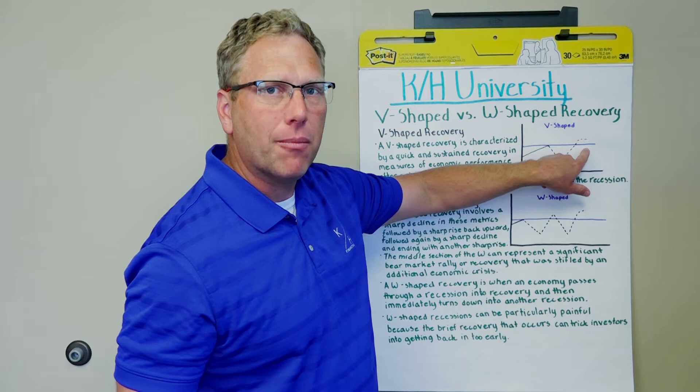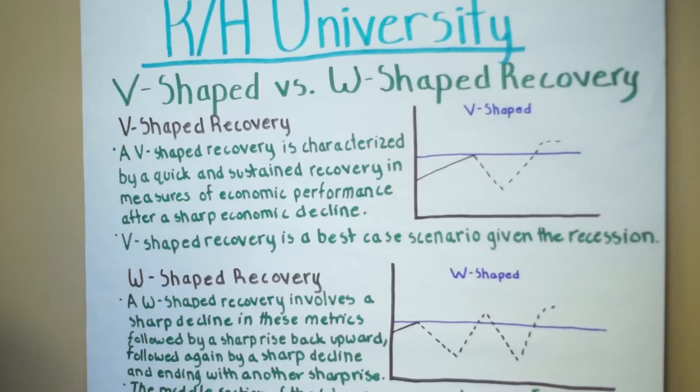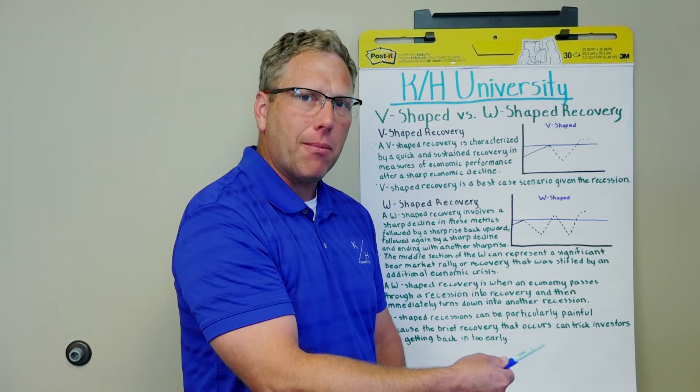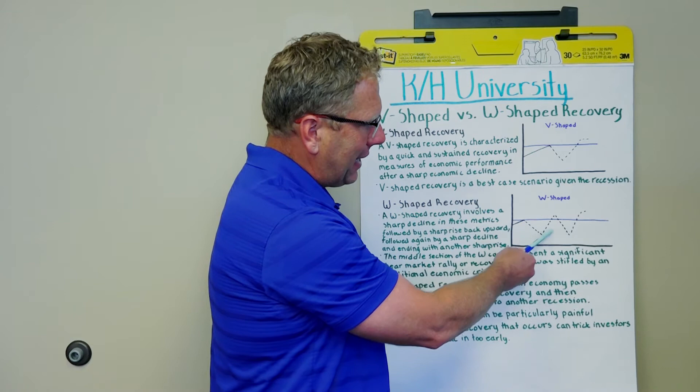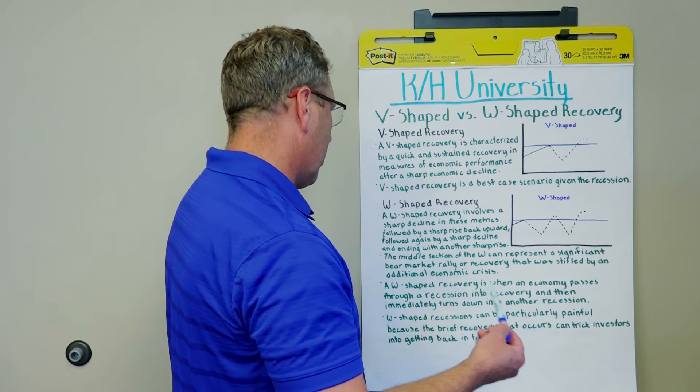A V-shaped recovery is one of the best types of recovery you could hope for after a recessionary environment. A W-shaped recovery, on the other hand, is part of the V recovery, but it's kind of like a head fake. Looks like things are getting better — the economy's starting to improve — but all of a sudden we get a quick washout back and test some of the lows in our economy and usually the stock markets, before we ultimately move higher. That's what a W-shaped recovery looks like.